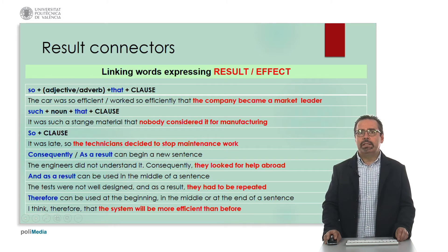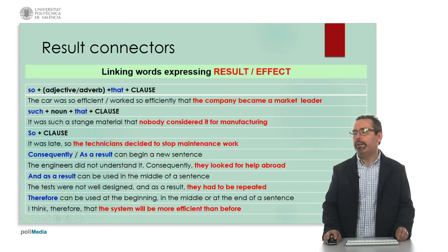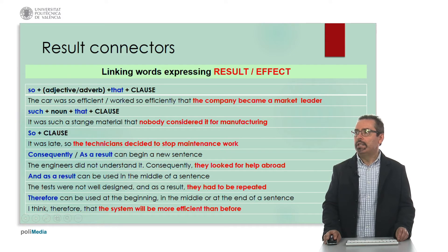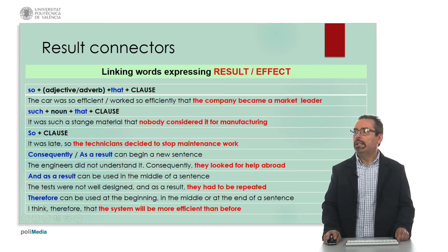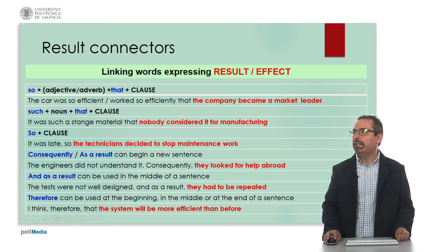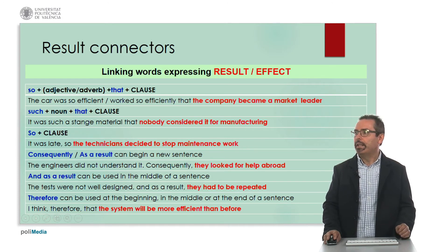We are going to move on now to some connectors to express result. Here we have a list of the most important ones. We have so plus adjective or adverb plus that and a clause — for example: the car was so efficient that the company became a market leader. Such plus noun plus that and a clause — for example: it was such a strange material that nobody considered it for manufacturing. So plus clause — for example: it was late, so the technicians decided to stop maintenance work. Consequently or as a result — for example: the engineers did not understand it; consequently, they looked for help abroad.